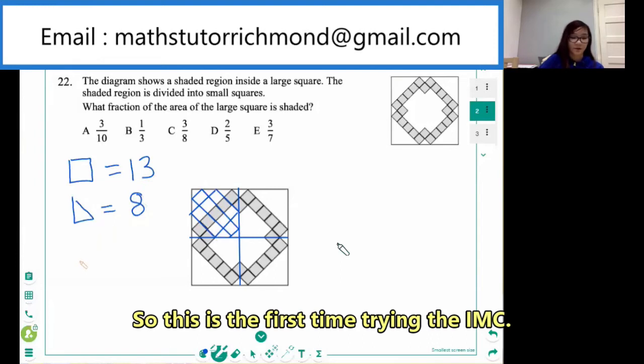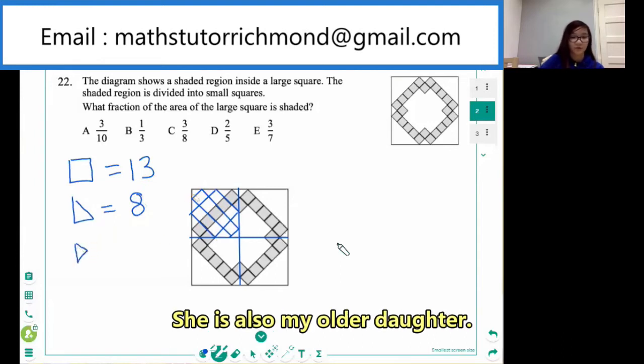And then the quarters, we have one in each corner, so we have four of them.